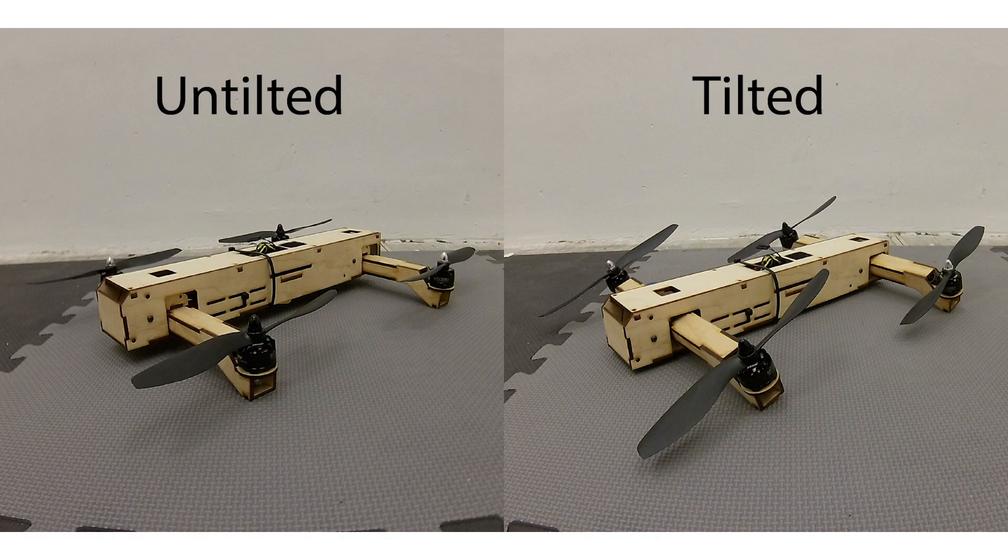We address this issue by allowing for flight in two configurations. In the untilted configuration, the vehicle has a small vertical dimension and higher pitch torque capacity. In the tilted configuration, the vehicle has a smaller drag area and better performance at higher speeds.